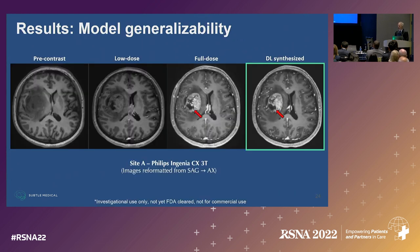One of the things we've worked really hard on is generalizability. If you worry about AI, one thing you should worry about is how well a technique that works at one site performs under other conditions. We've spent a lot of time looking at a wide range of imaging vendors and acquisition parameters to make this as robust as possible.